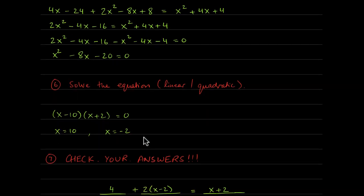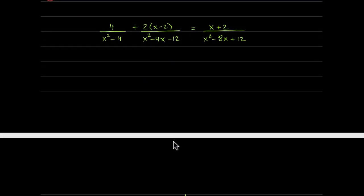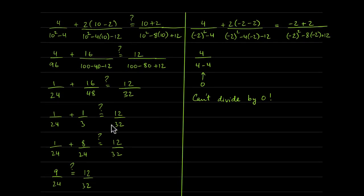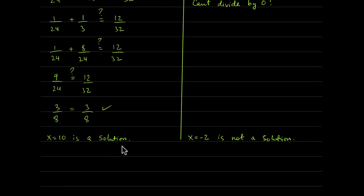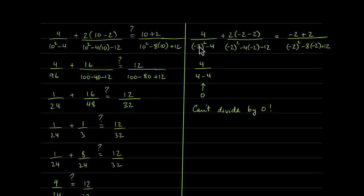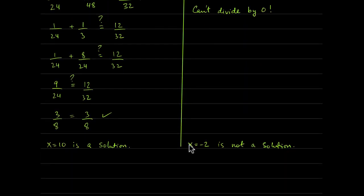These are potential solutions — we must check them. Plugging in 10 gives three-eighths equals three-eighths, so x equals 10 is a solution. Plugging in negative 2: negative 2 squared is 4, and 4 minus 4 gives 0 in the denominator of the first term — we cannot divide by zero. So x equals negative 2 is not a solution; it is a false or extraneous solution.